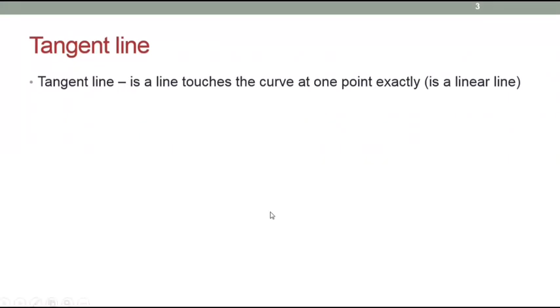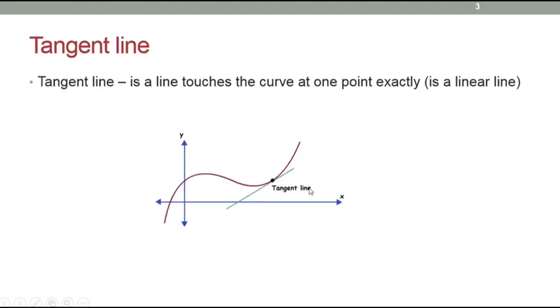Tangent line is a line that touches the curve at exactly one point. It is a linear line. The green line shown here is called the tangent line — it touches the curve at exactly one point.